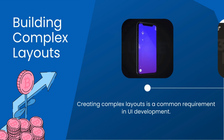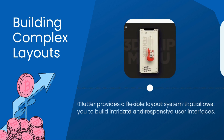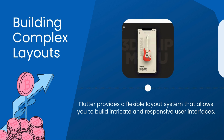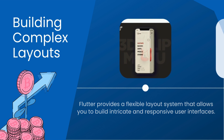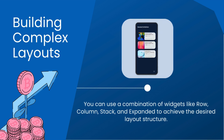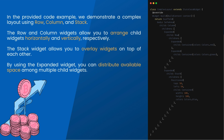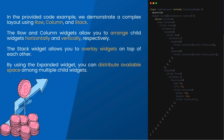Building Complex Layouts. Creating complex layouts is a common requirement in UI development. Flutter provides a flexible layout system that allows you to build intricate and responsive user interfaces. You can use a combination of widgets like Row, Column, Stack, and Expanded to achieve the desired layout structure. The Row and Column widgets allow you to arrange child widgets horizontally and vertically, respectively. The Stack widget allows you to overlay widgets on top of each other. By using the Expanded widget, you can distribute available space among multiple child widgets.